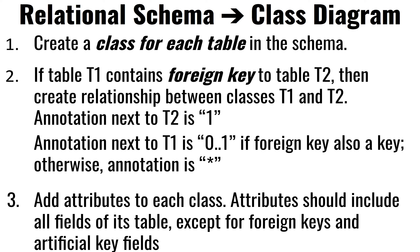Here's what the algorithm might look like for converting tables into a class diagram. For every table, you create a class, and the name of the table becomes the name of the class. If the original table contains a foreign key, you create a relationship — a line — between the two tables. So if table T1 has a foreign key to table T2, you draw a line between classes T1 and T2.